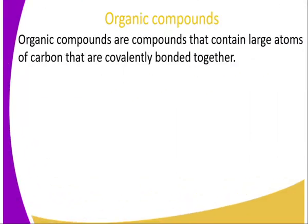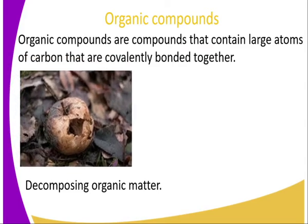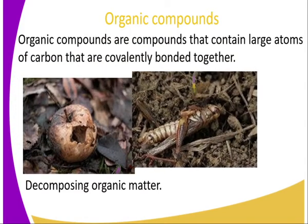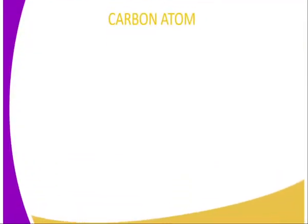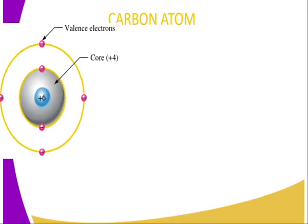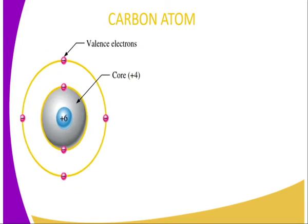Organic compounds are compounds that contain large atoms of carbon that are covalently bonded together. These compounds we find mostly in decomposing organic matter, which may be from an animal or a plant — that is, all living organisms. When they decompose, they release these organic compounds. Since they are made up of carbon atoms, it is important to understand the structure of carbon atoms. The carbon atom has an electronic configuration of 2-4. It is atomic number 6, hence the configuration 2-4.